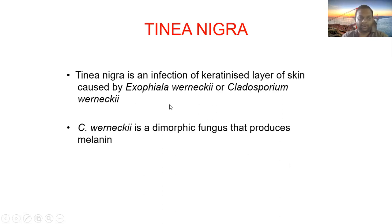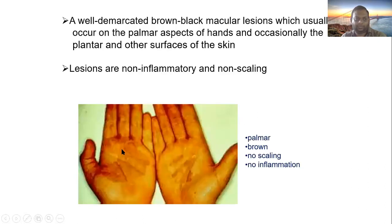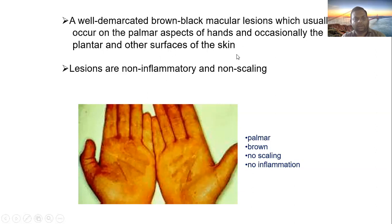Tinea Nigra is an infection of the keratinized layers of the skin caused by Exophiala werneckii, also known as Cladosporium werneckii. It is a dimorphic fungus that produces melanin. The condition is again a cosmetic problem. Well-demarcated brown-black macular lesions appear, usually on the palmar aspect of the hands and occasionally on the plantar aspects. Lesions are non-inflammatory and non-scaly — brown, with no scaling and no immune reaction.